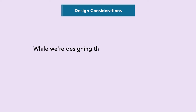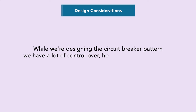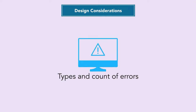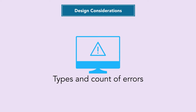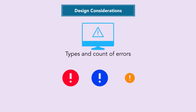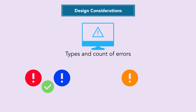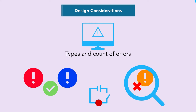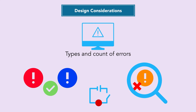When designing the circuit breaker pattern, you have significant control over the logic. You can configure which types and counts of errors are monitored. For example, if your service throws three different kinds of errors and types one and two are acceptable, but type three is not, you can configure the circuit breaker to only trip on type three errors exceeding a certain count within a time window. This is the kind of intelligence you can bake into your circuit breaker implementation.